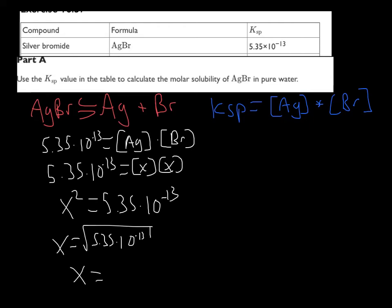X equals 7.31 times 10 to the minus 7. Now, what is this? It's the molar solubility of AgBr in pure water.